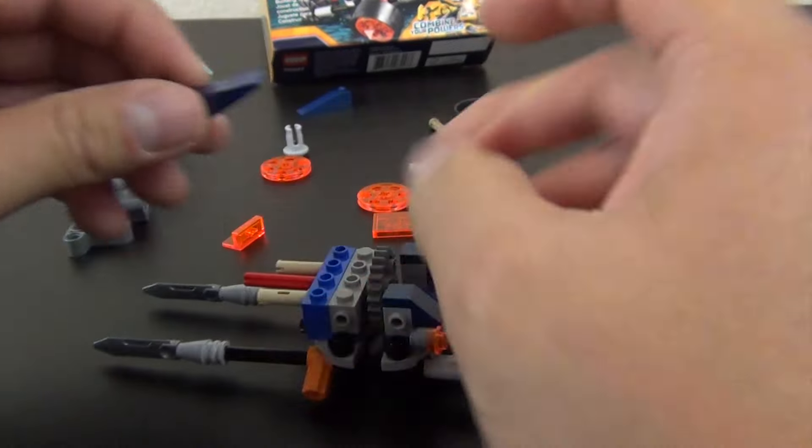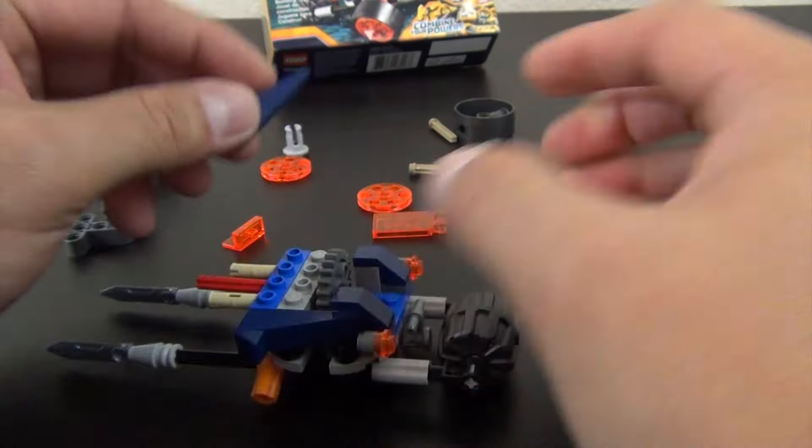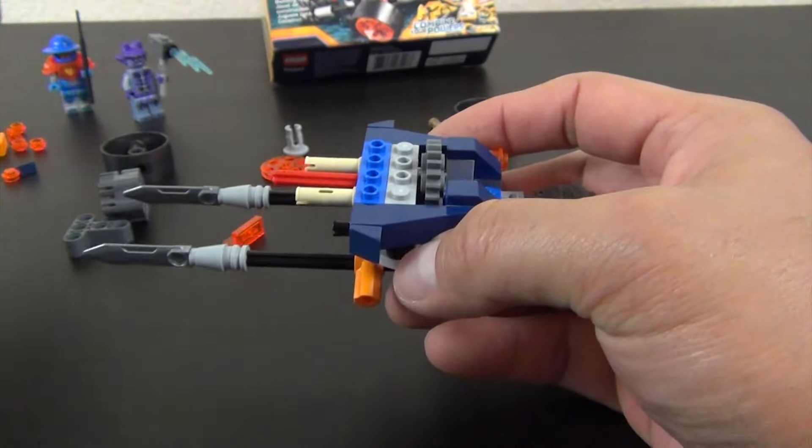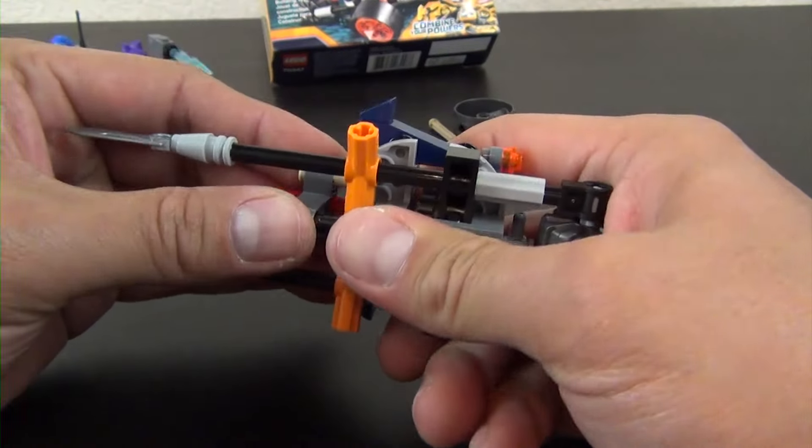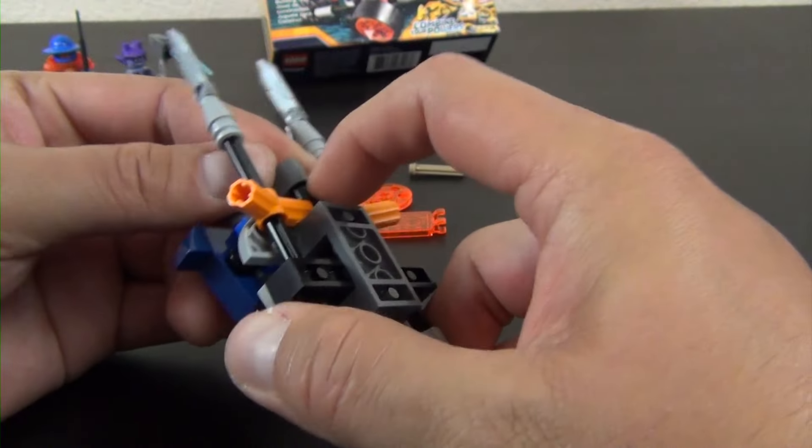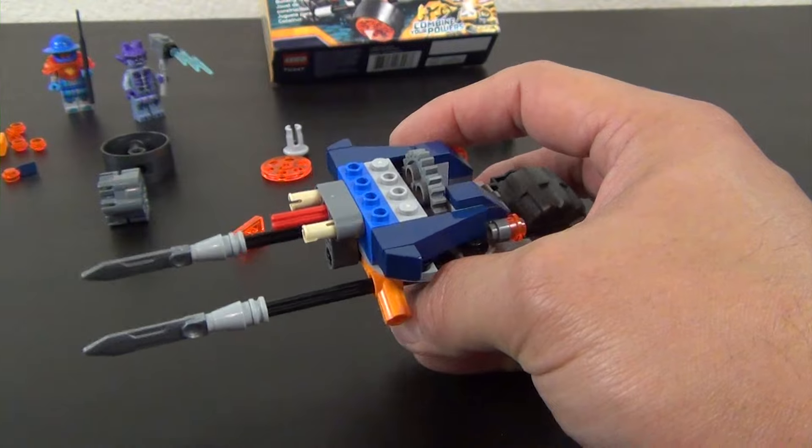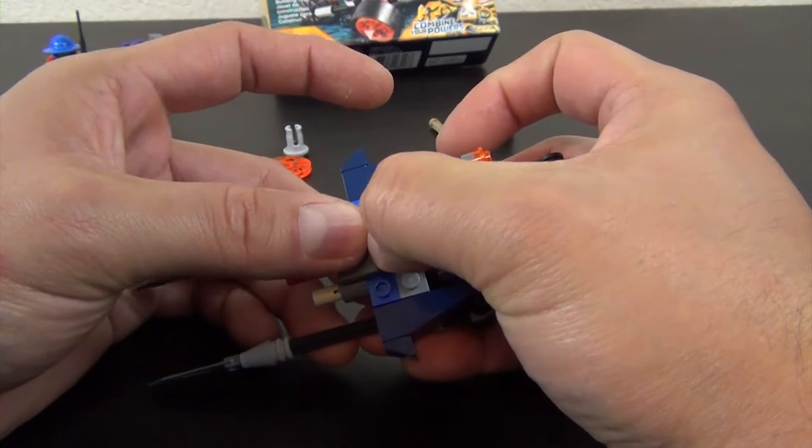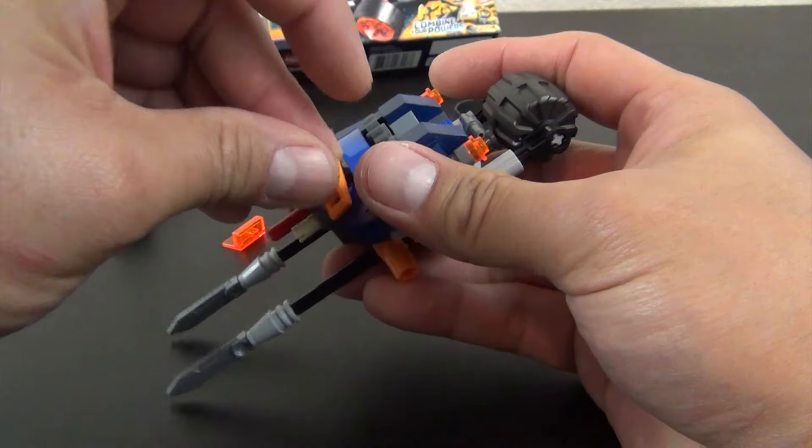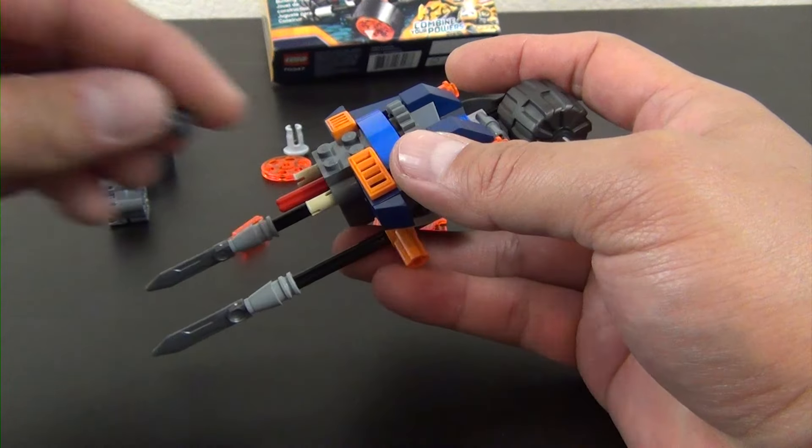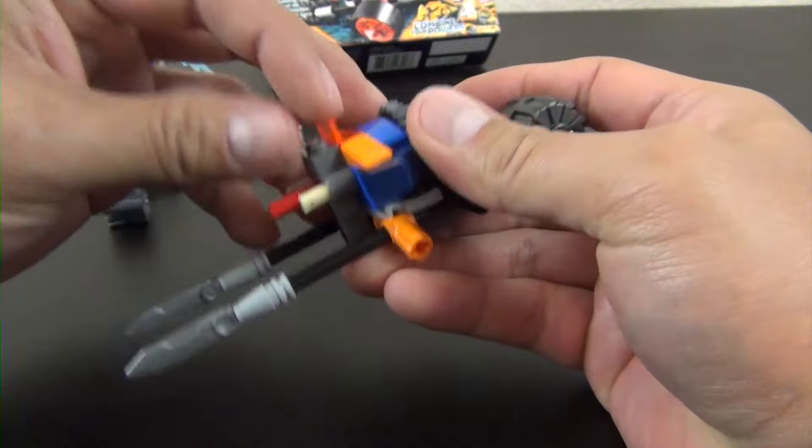Next up we have these slopes. These are going to connect on the sides. Line up three different technic pins to put that piece on. Looks like we got it in there pretty good. Two by three plate, curved piece, some slotted slopes. And plate, and then a trans fluorescent orange panel.